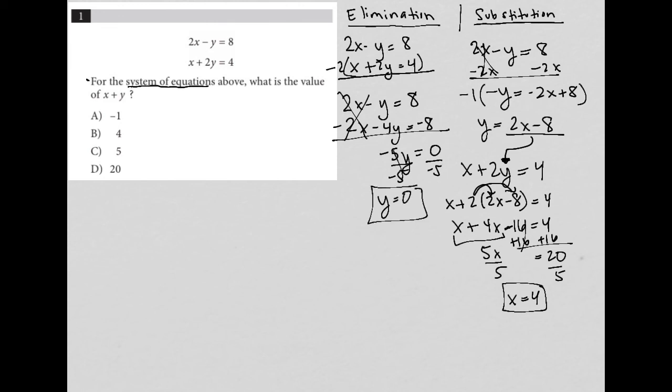Okay, now the question wants us to figure out what x plus y is. So x is 4, y is 0, therefore x plus y equals 4, which is answer choice B.